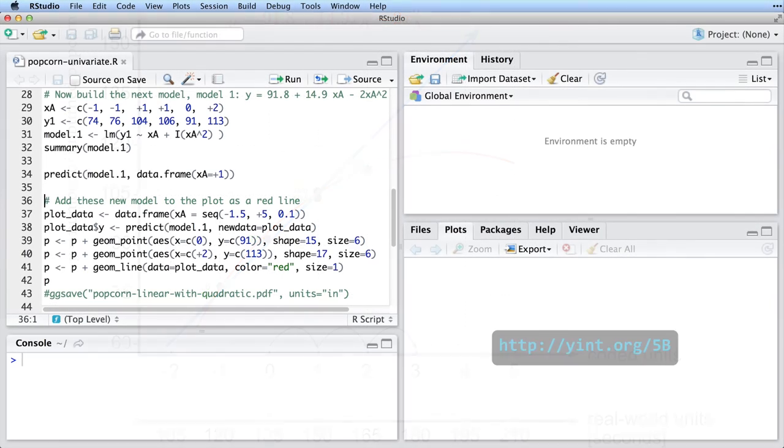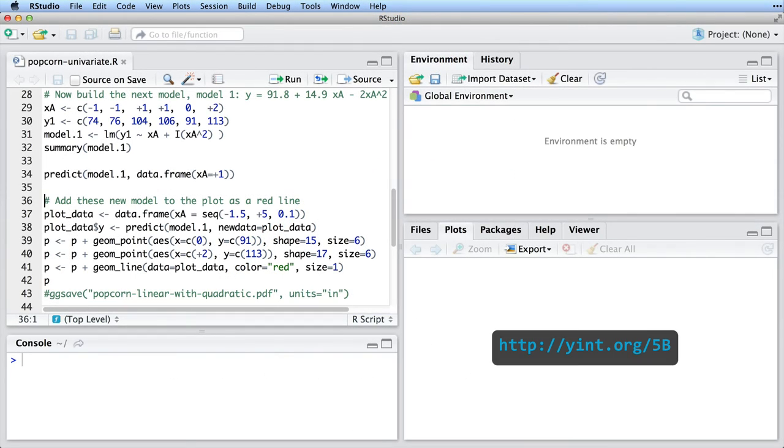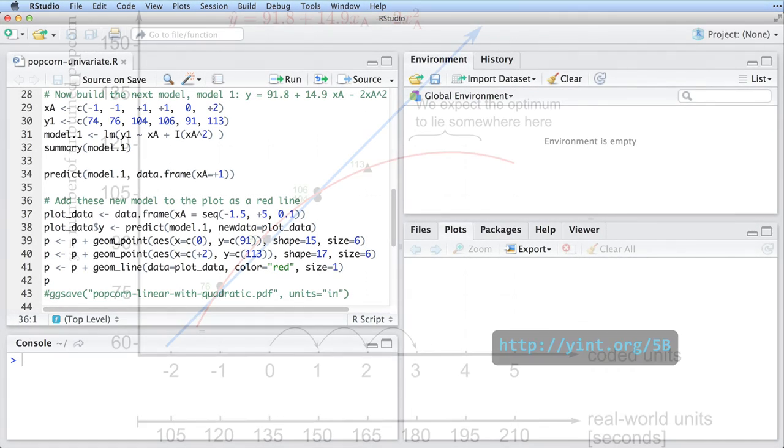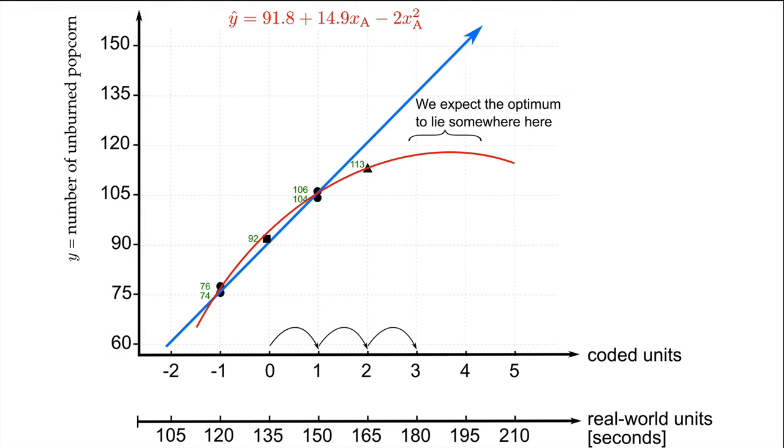We can either find the maximum from our revised model by looking or eyeballing the plot, or you can go find it mathematically. It doesn't matter too much, because George Box's reminder is that all models are wrong. Visually, we see the model predicting an optimum at about 3.6 and a value of 118 popcorns. What does a coded value of 3.6 represent in real-world units? It's 3.6 times 15 for the half range, and add to it a value of 135 for the center.